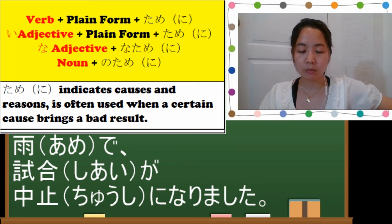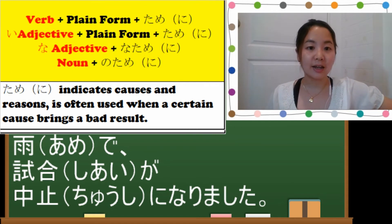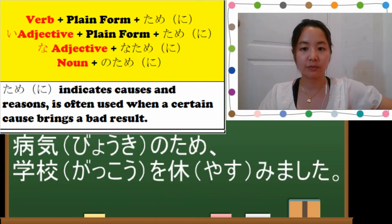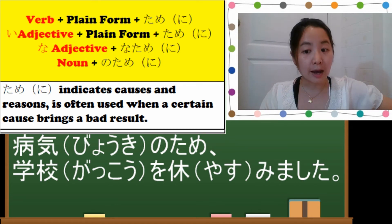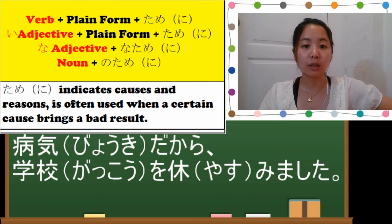Let's do another example. Byouki no tame gakkou wo yasumimashita. Byouki no tame gakkou wo yasumimashita. So byouki is a noun. After that you put no tame or no tame-ni. If it's kara it will become byouki da kara gakkou wo yasumimashita.